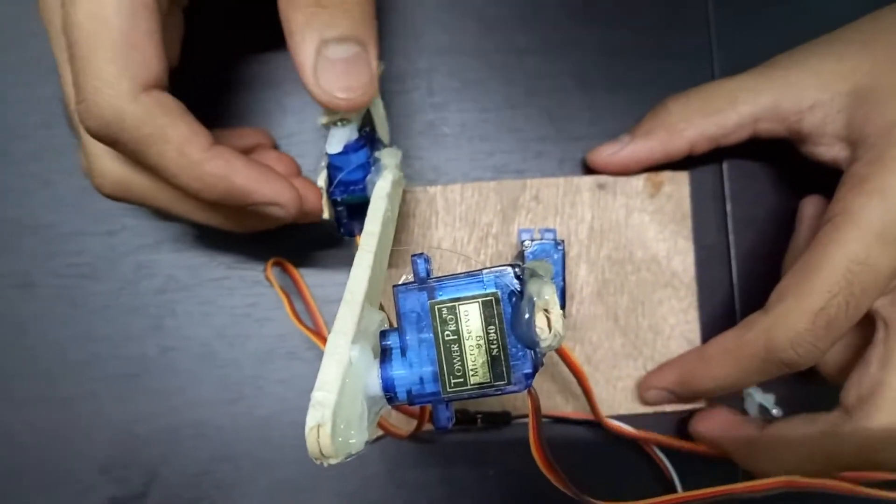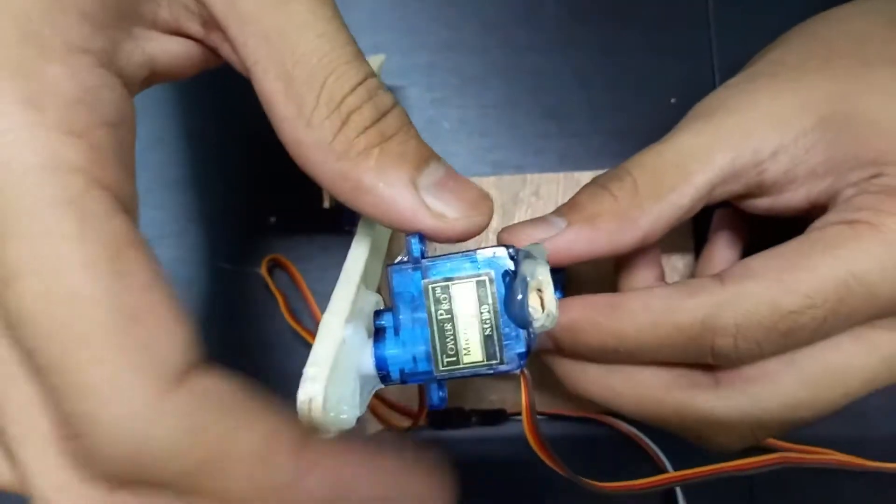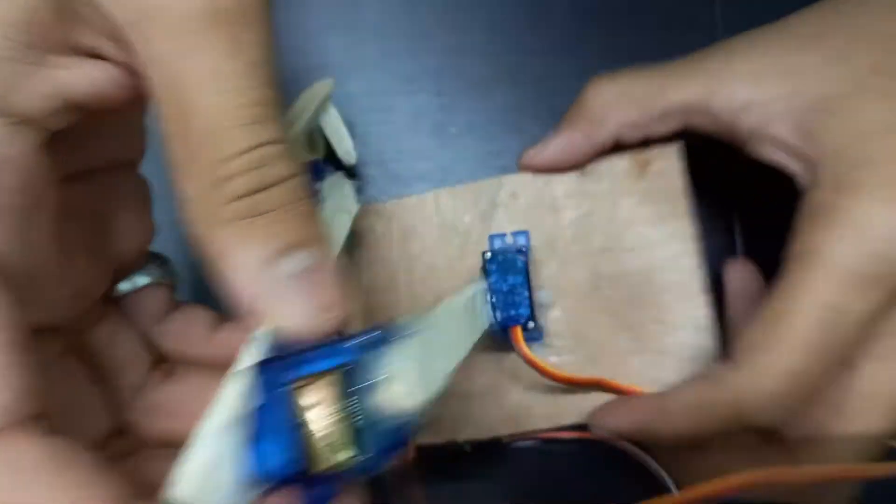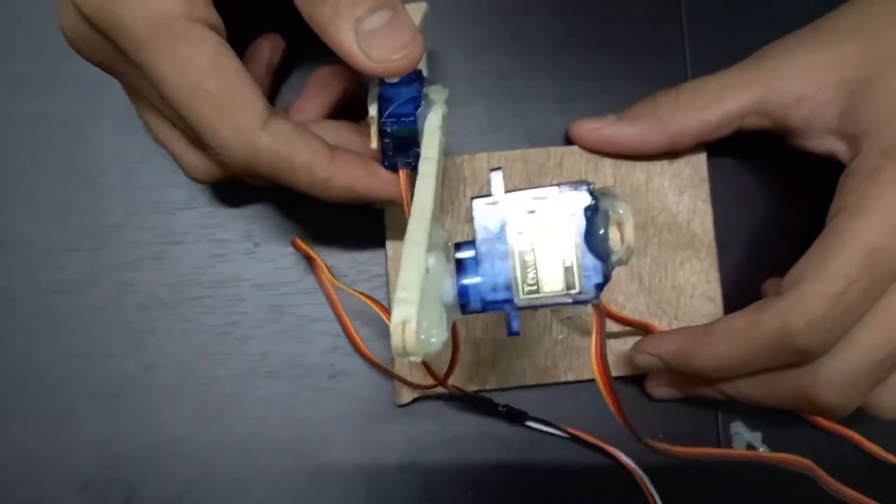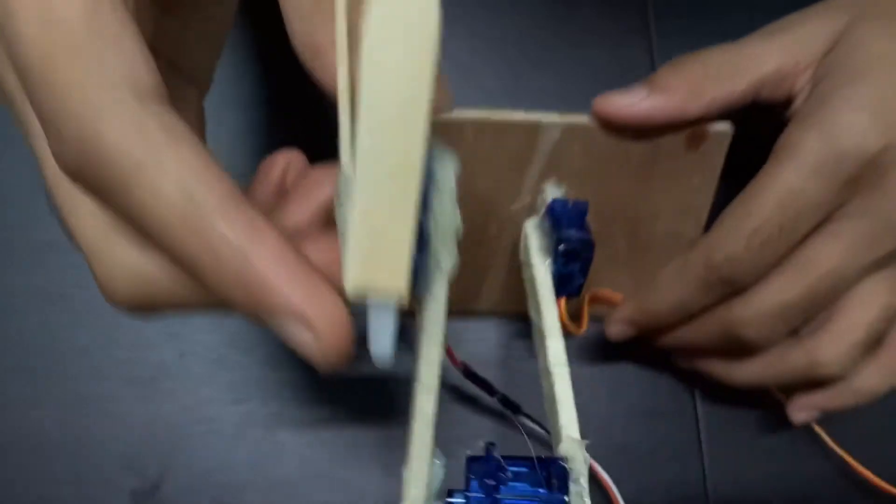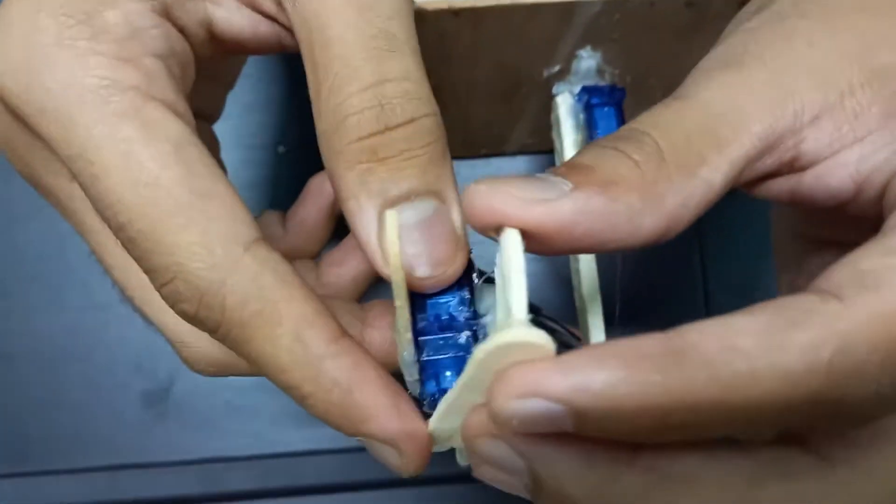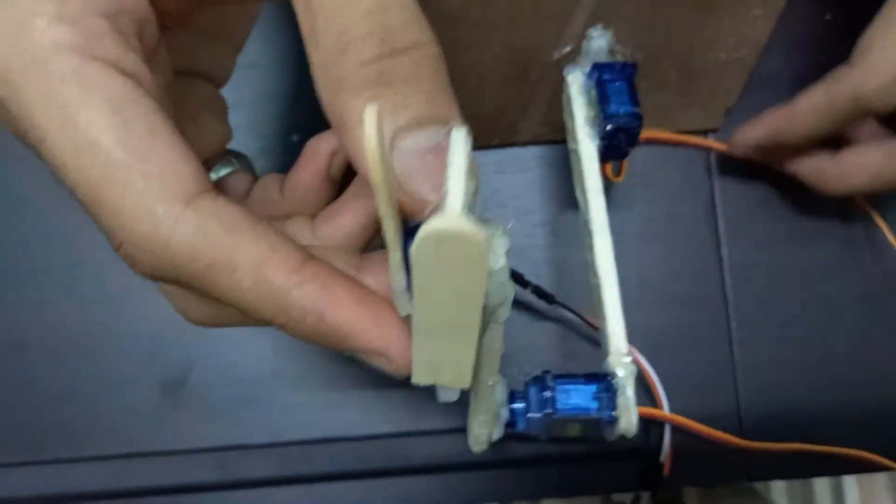As we have stuck all the servo motors together, our arm is ready. Here is the base servo motor. It is the arm motor for up-down movement. This is the wrist movement, open and close of the trap.